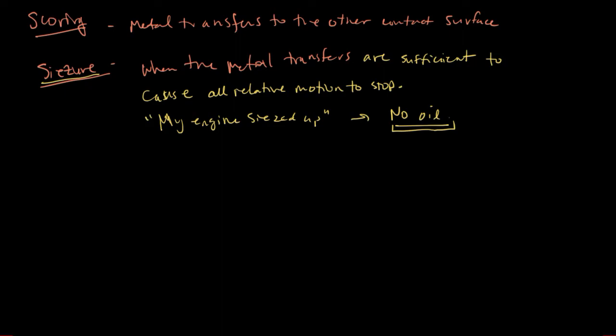All right, so that is adhesive wear and some of the terms. There's actually two more terms that we scale the adhesive wear terminology with, and that is galling. Galling is when we have severe adhesive wear, and we also have scuffing. This is mild adhesive wear. Once you see it and understand the mechanism, it's pretty obvious to spot on different things.